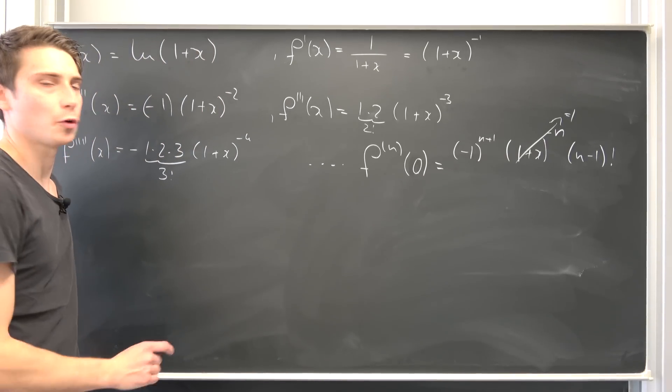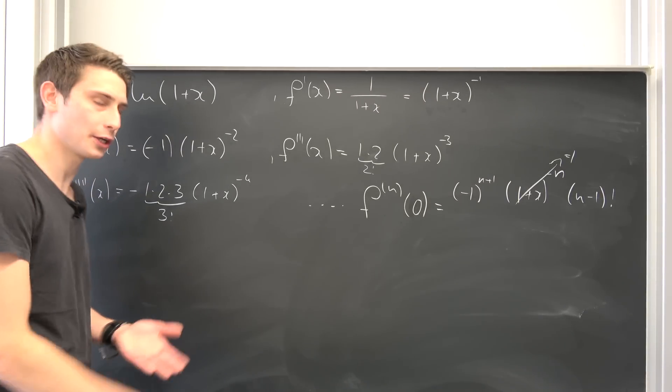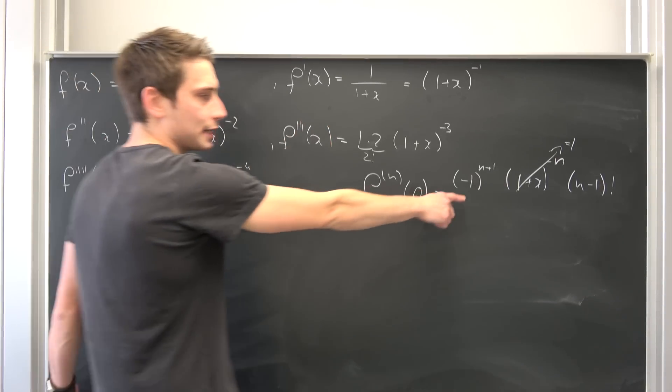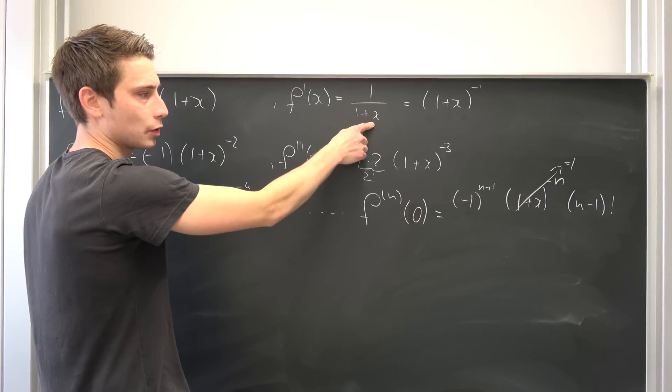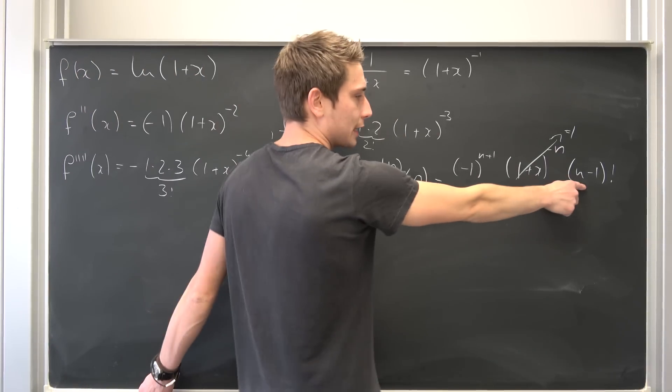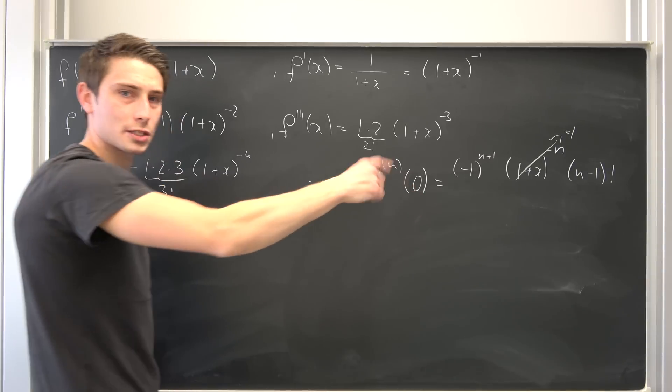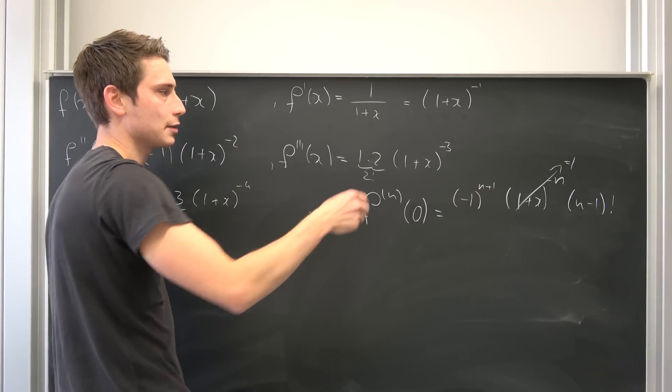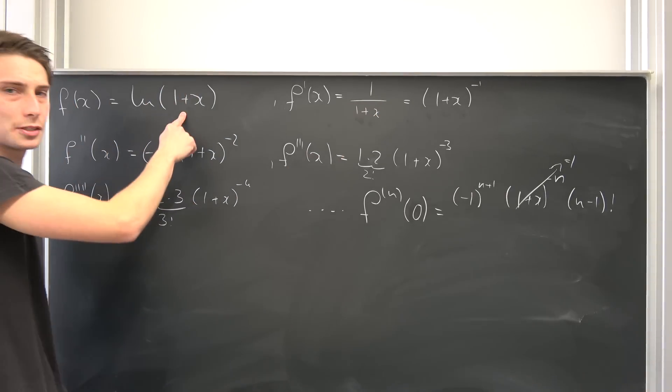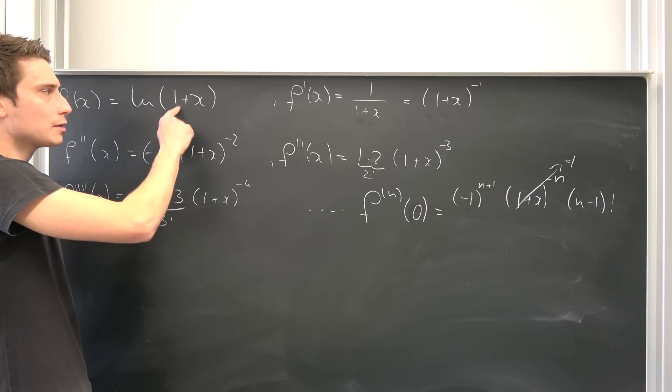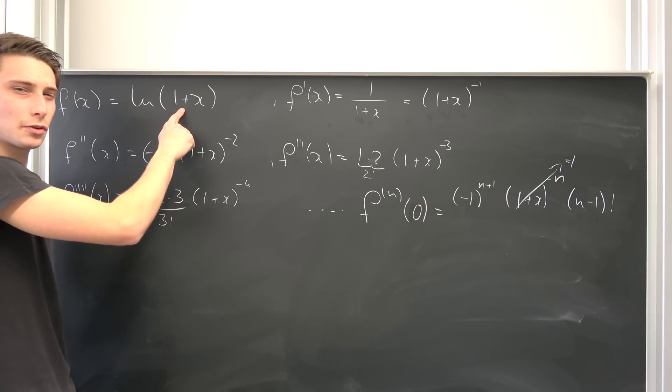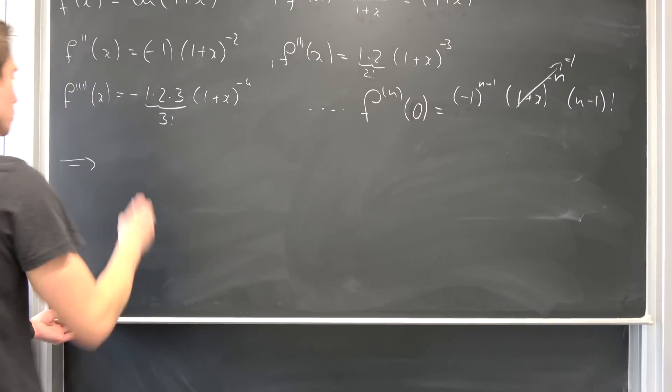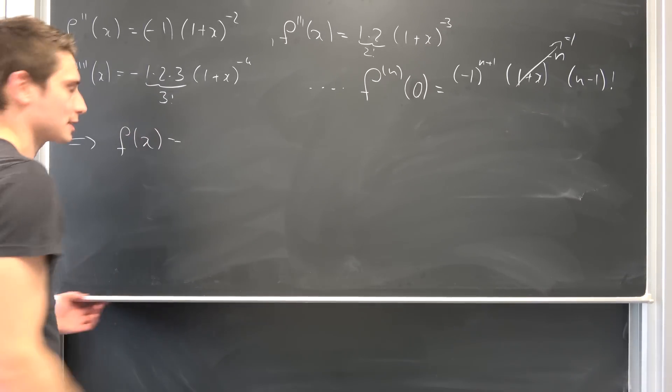But does our pattern hold for all the terms or is there one odd term out? On the first term we are going to get negative 1 to the second power, okay this is positive, this already holds. And then we have negative 1 minus 1 is 0 factorial, so this still holds, this is a 1. If you plug 0 into here, this is just going to be a 1 in itself. So our pattern holds up until here. But on this term, what do we get? This is natural log of 1 plus 0, if you plug 0 into here. Natural log of 1 is just going to be 0.